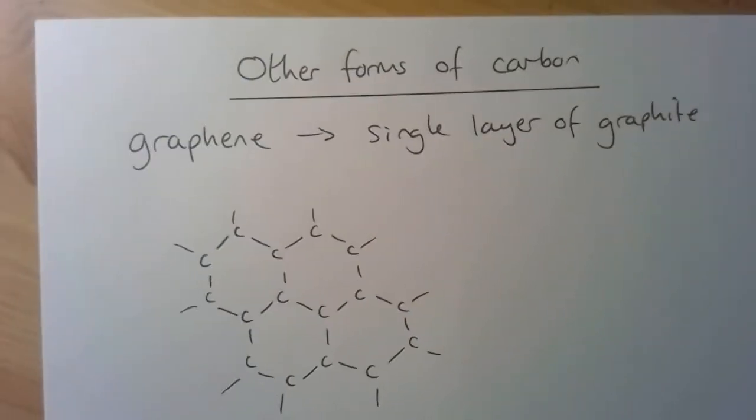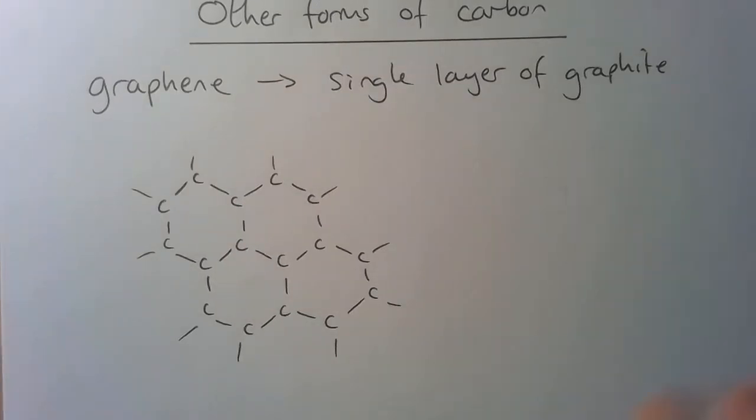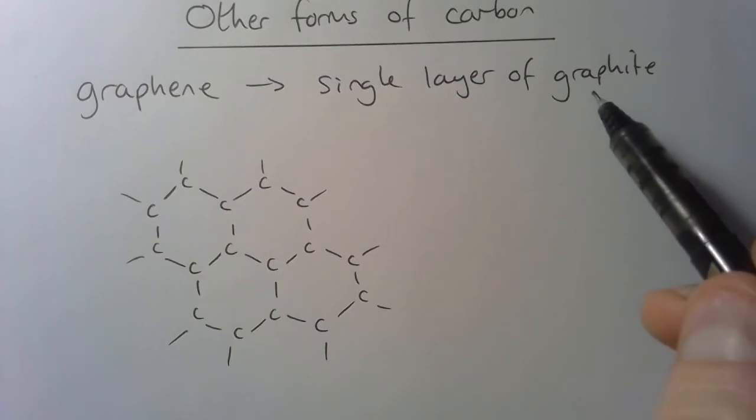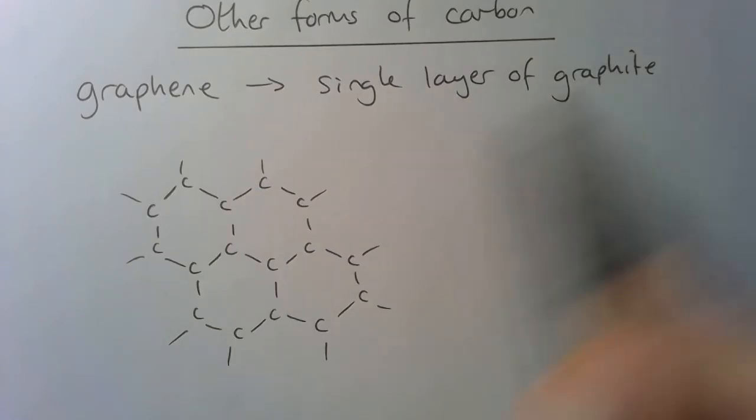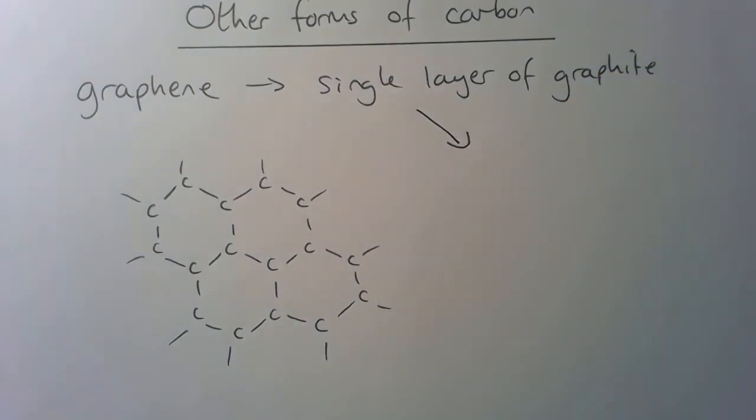That has some really important features. We know that each carbon atom has got a spare electron, and that spare electron is delocalized. So let's think about what both of these things mean with a single layer of graphite. Because we've got a single layer of graphite, it's incredibly very thin.